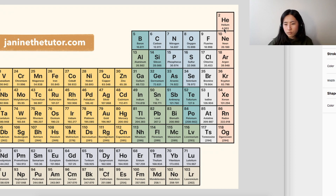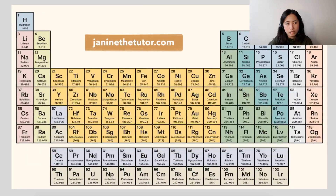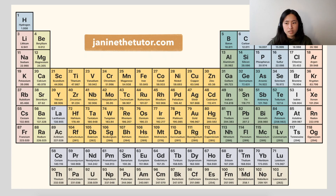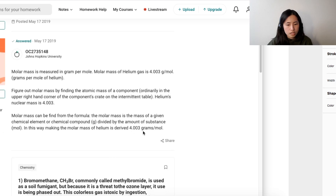So this helium, we know that this is 4.00. So the molar mass of helium - because we know that it exists as a gas, that means it's going to be 4.00, or 4.00 rather, because you don't really need to round this. So that's 4.00 grams per mole, which is right.